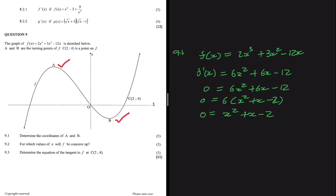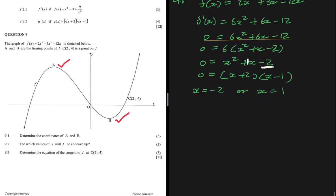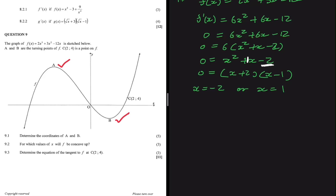Now we factorize. We're looking for two numbers that multiply to give −2 and add to give the coefficient of x, which is 1. Those numbers are +2 and −1, so we get (x + 2)(x − 1) = 0. Solving gives x = −2 or x = 1. These are the x-values of our turning points — at A, x = −2, and at B, x = 1.